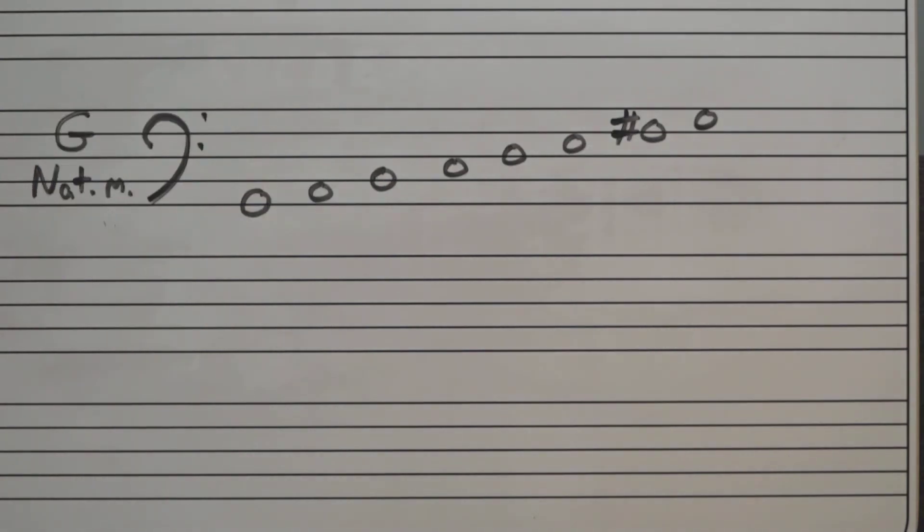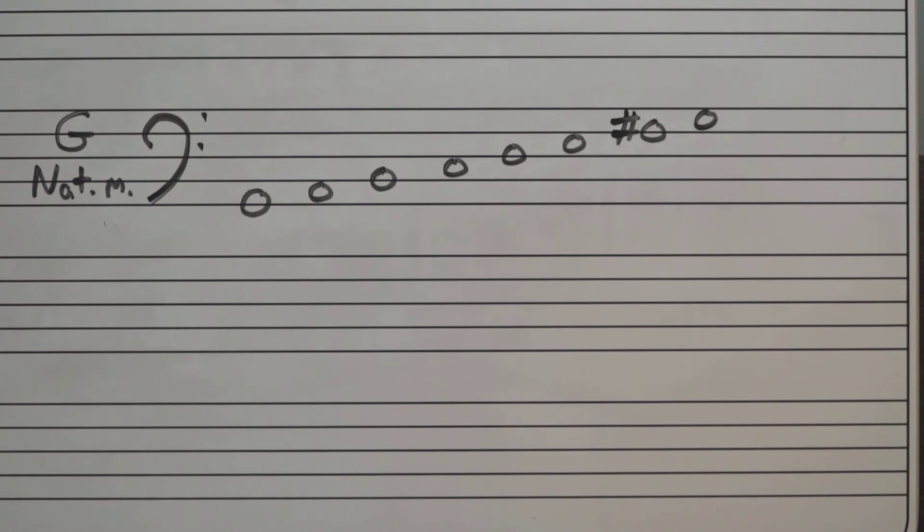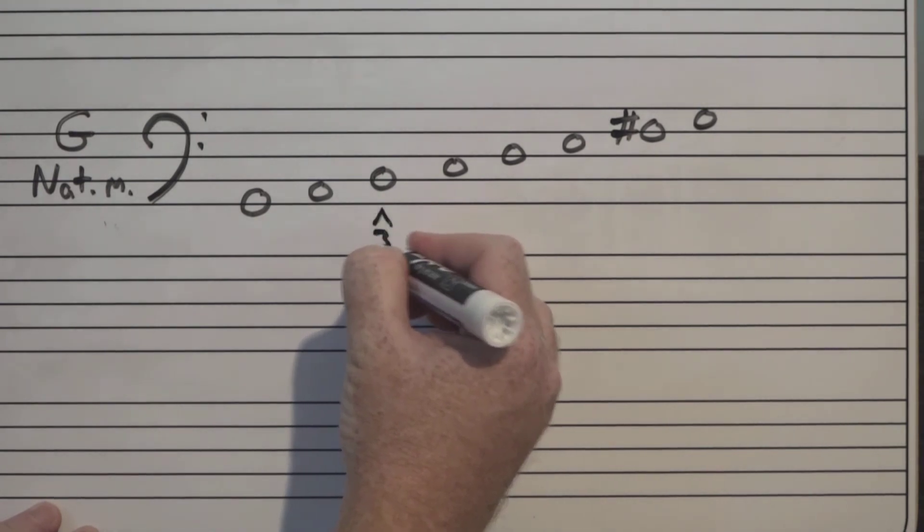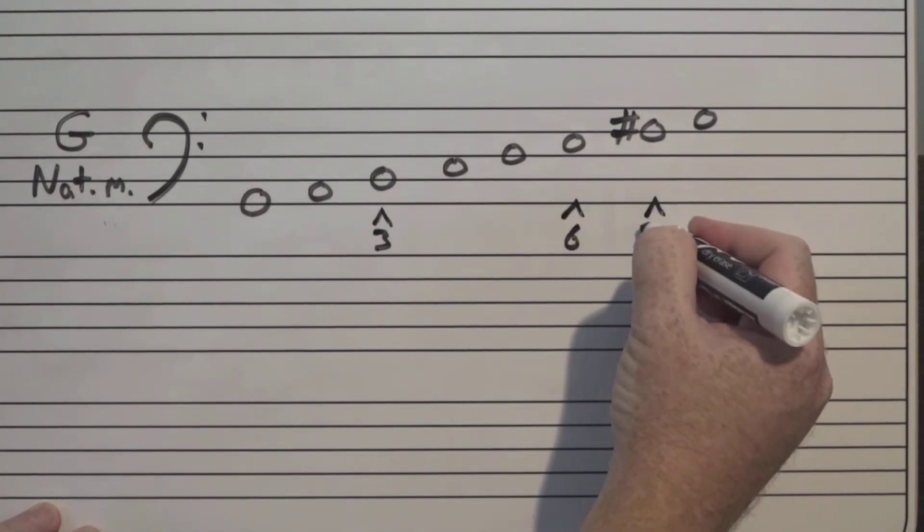Now something interesting happens on our G natural minor scale. And I'm going to combine the two steps we were just doing in the E major scale and the E natural minor scale, and just use one line. So I already have the notes of the G major scale written out. And to make G natural minor again, we're going to lower the third scale degree, lower six, and lower seven.